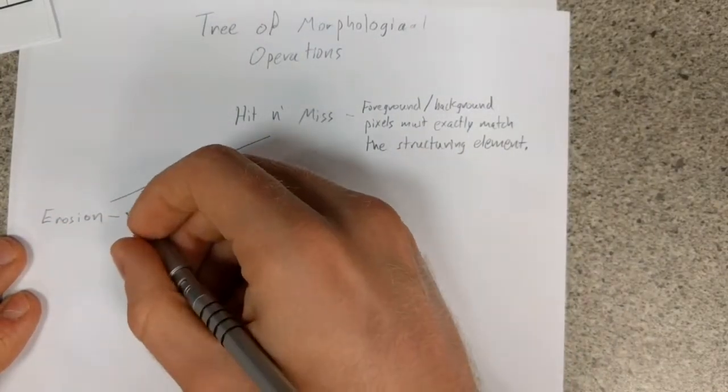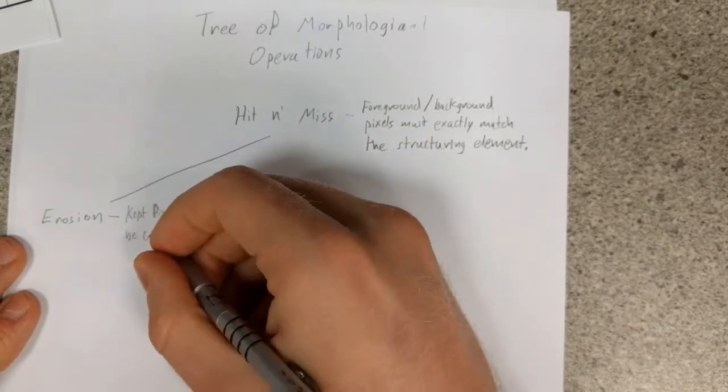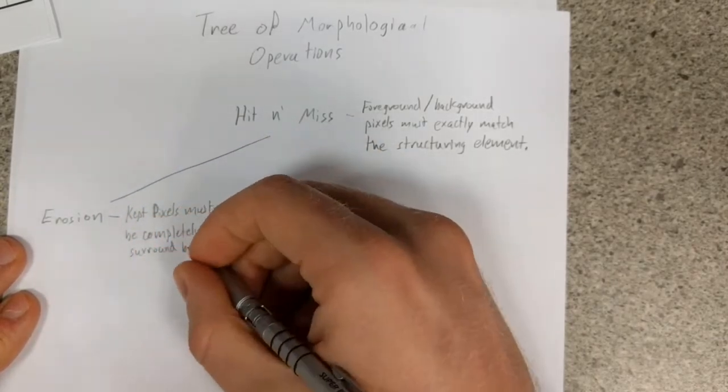Further down the tree, we have erosion. Erosion removes all pixels in the foreground that are not completely surrounded by other foreground pixels.